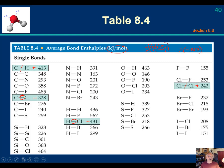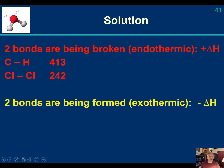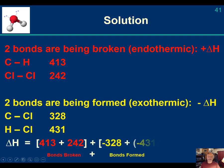Now that we know what we're making and what we're breaking, we put it all together. Two bonds are being broken — that's a positive delta H: 413 for the carbon-hydrogen and 242 for the chlorine-chlorine. Two bonds are being formed — that's a negative delta H: 328 for carbon-chlorine and 431 for hydrogen-chlorine. It's just bonds broken plus bonds formed, and you get a result of minus 104 kilojoules.